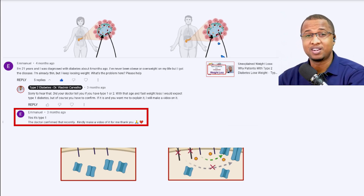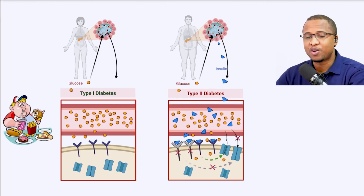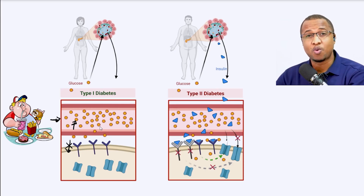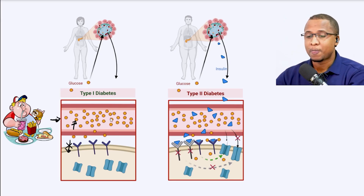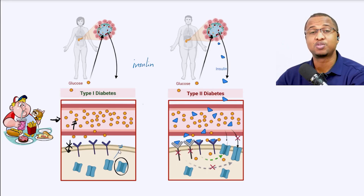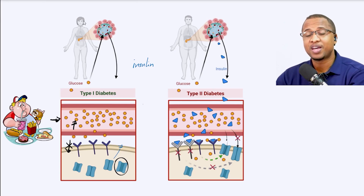I'll try to explain to you clearly so that you'll never get confused. For some of you following this channel, you know that when you eat, your blood sugar goes up. But you also know that glucose cannot cross the membrane of the cells. For them to cross the membrane, they need transporters called glucose transporters. But for some cells, like muscle cells and fat cells, the transporters are inside the cells. And they need insulin to come and tell these cells to bring the transporters to the membrane to get glucose. And this insulin is made by some cells in your pancreas called beta cells.